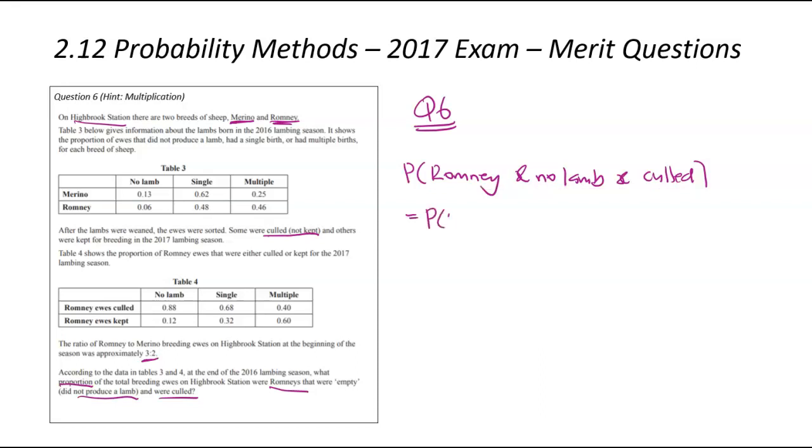They had no lamb and they were culled. So we need to go ahead and use our multiplication principle. So we're going to break this down. To find that probability, we need to go, well, the probability of the random ewe being Romney, times the probability of not having a lamb given they were a Romney, because we know that they're Romney, times the probability of being culled given they were a Romney with no lamb. So it is fairly complicated, but pretty straightforward once you get into it.